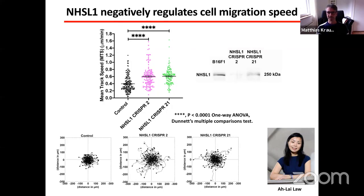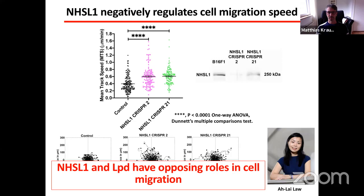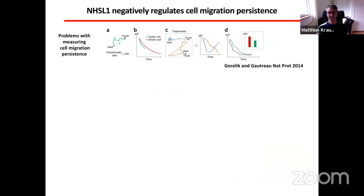This was surprising because previously we had found that lamellipodin positively regulates migration, and both lamellipodin and NHS-like 1 co-localize in lamellipodia at the leading edge. So we then wanted to analyze whether NHS-like 1 functions in cell migration persistence as well.